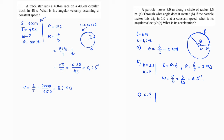The centripetal acceleration a equals V² divided by R. V equals 3, so V² equals 9, divided by R equals 1.5. That gives 9/1.5 equals 6 meters per second squared.